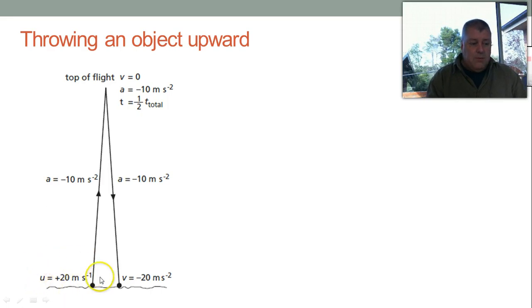If we throw the ball up at 20 meters per second, now they're using the Queensland textbook using 10 meters per second, we would use 9.8. The ball goes up, reaches the top of the flight where the velocity is zero. It takes half as much time to go up as it does to do the whole flight. Another way of saying it, it takes as long to go up as it does to come down.